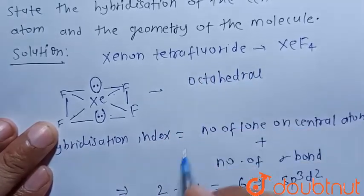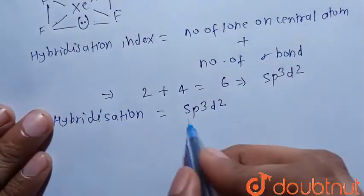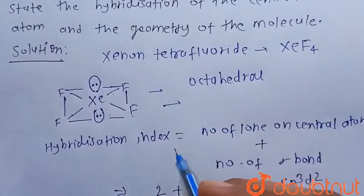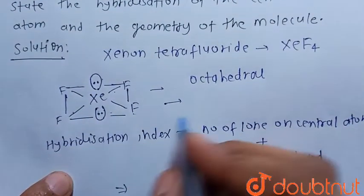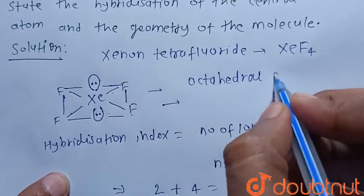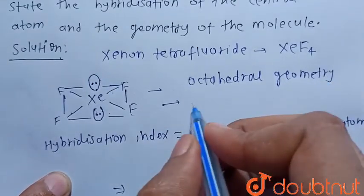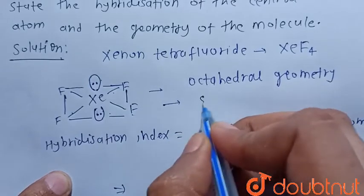Geometry is octahedral because its hybridization is sp3d2. But when we calculate shape, we do not consider the lone pairs. So this is the octahedral geometry, and the shape is square planar.